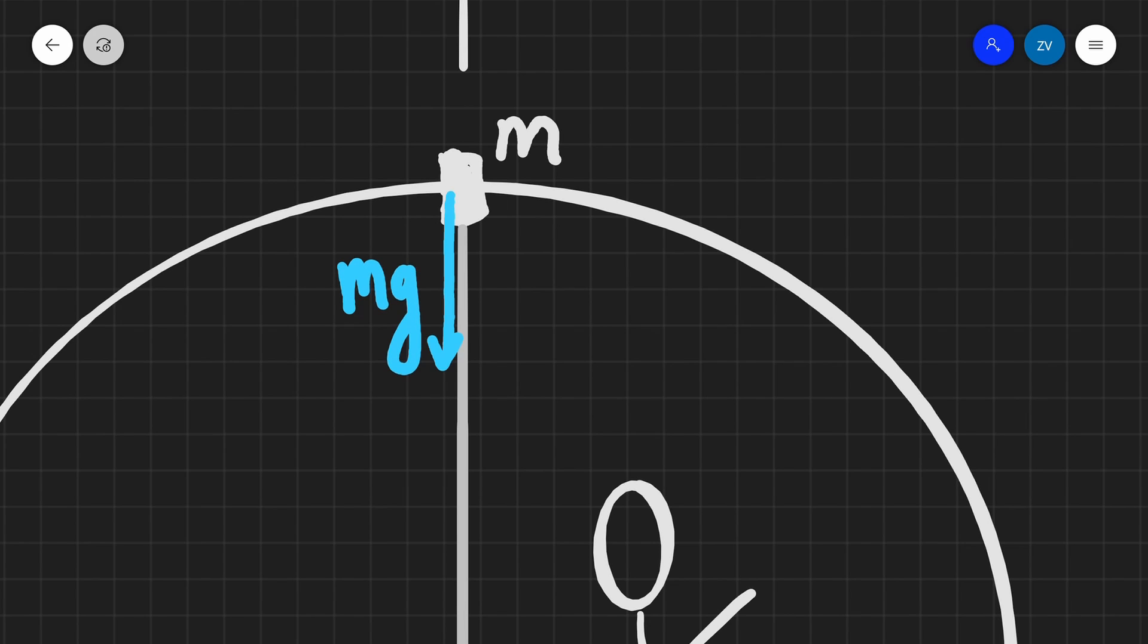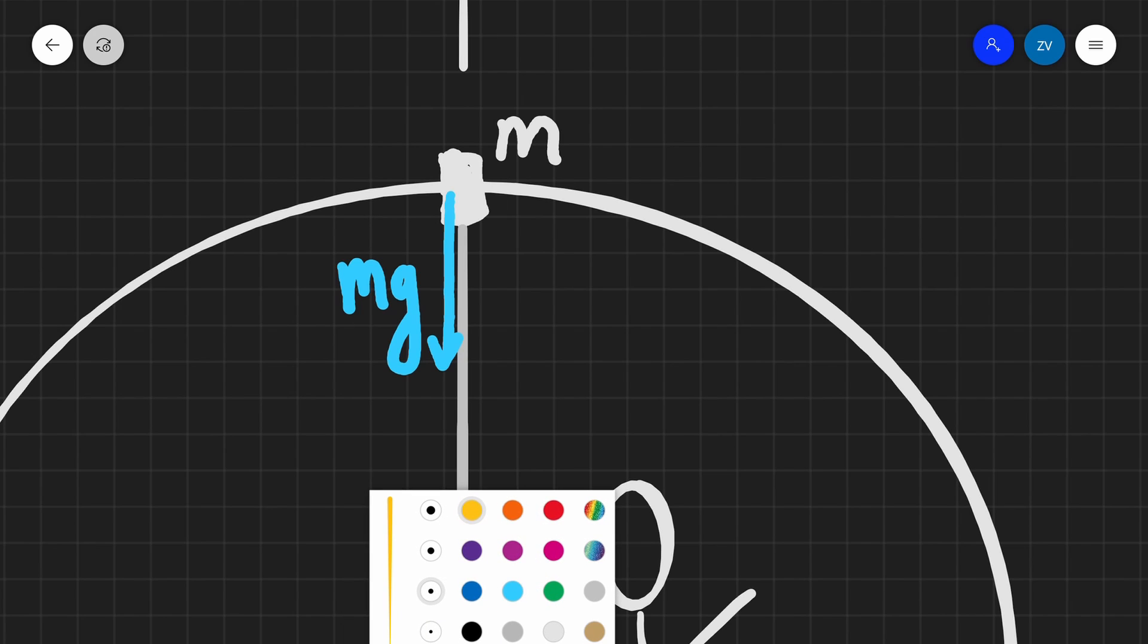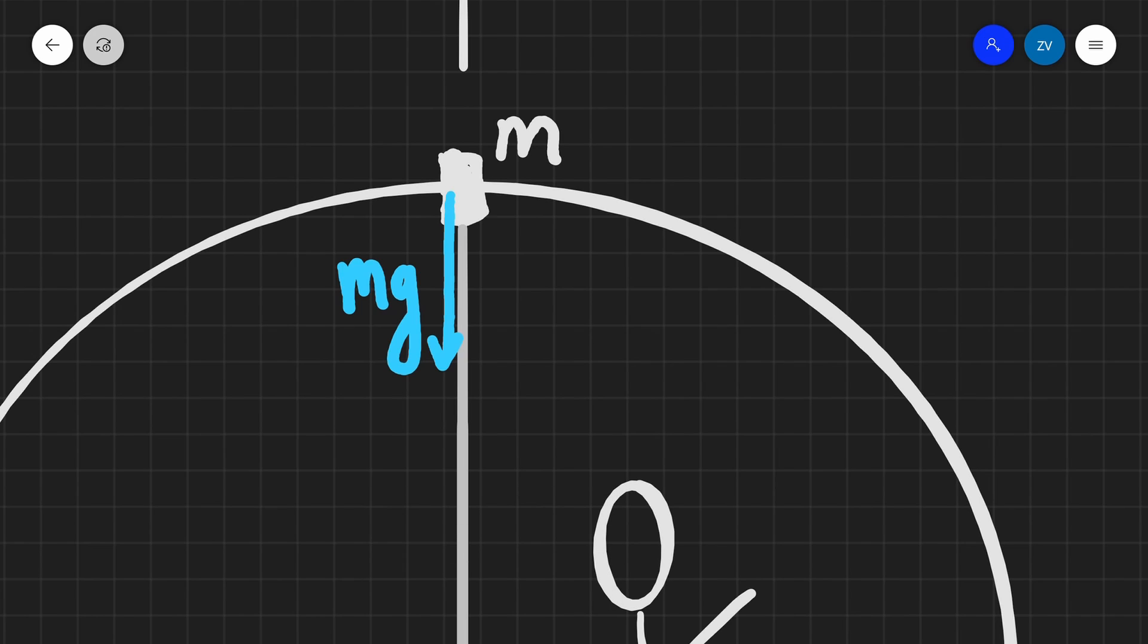Now, additionally, there's going to be a force of tension, which is going to be acting along the direction of this piece of string. And so let's just draw that along here. So there's going to be a second force. We're going to say that this force here is T.